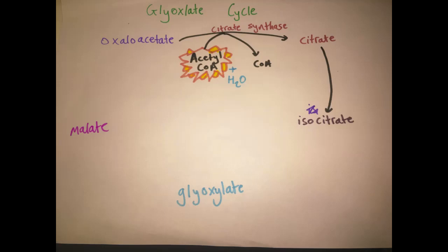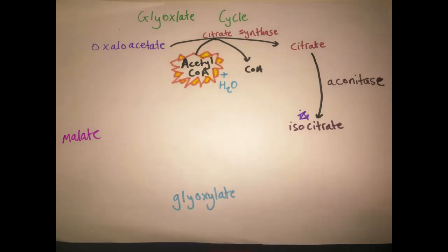Citrate is then isomerized by the enzyme aconitase to give a molecule of isocitrate.